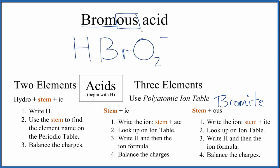So we saw that the stem was followed by OUS. We just replaced that with ITE. That gave us the ion, and we looked that up. So at this point, we have HBrO2 as the formula for bromous acid.